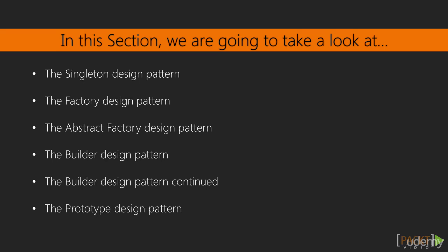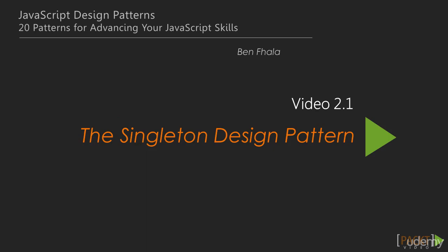Above that is the factory design pattern, which is for a process where we want to have a factory that creates objects. Above that is the abstract factory, which is a little bit more sophisticated. Followed by a builder, which is even more sophisticated. And we're going to wrap up the creational design patterns by taking a look at the prototype design pattern — one that is very native to JavaScript. So let's jump right into the first one: the singleton design pattern.